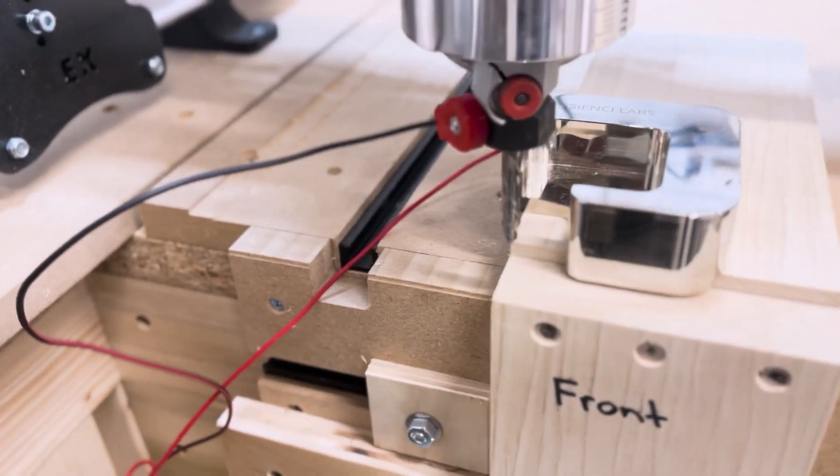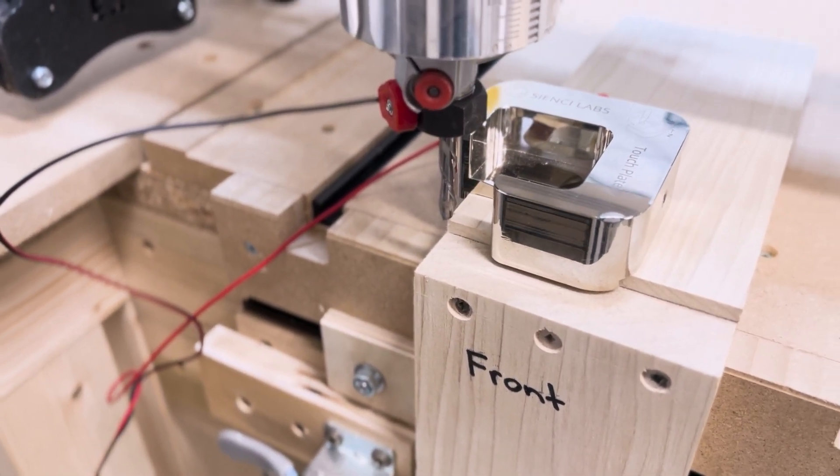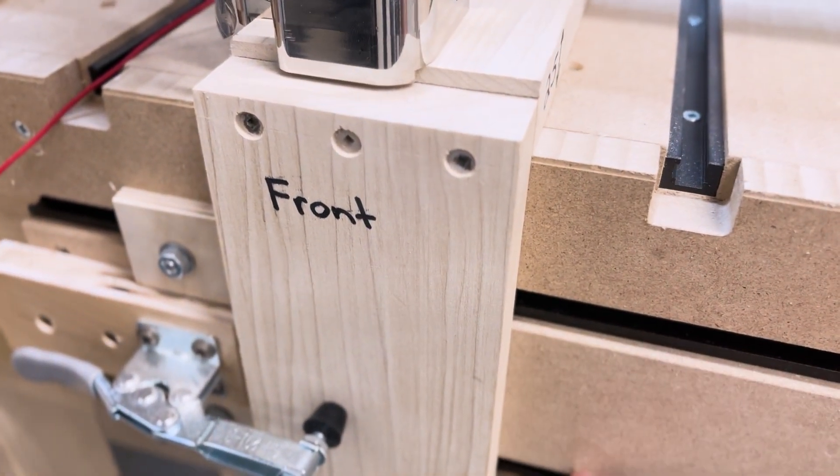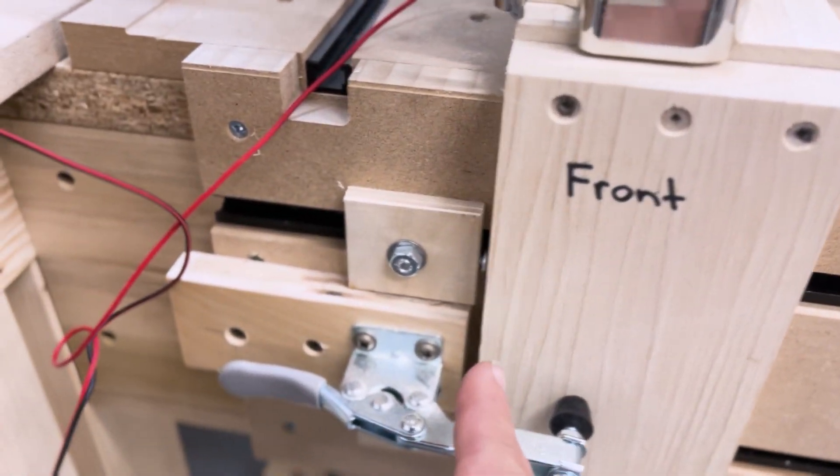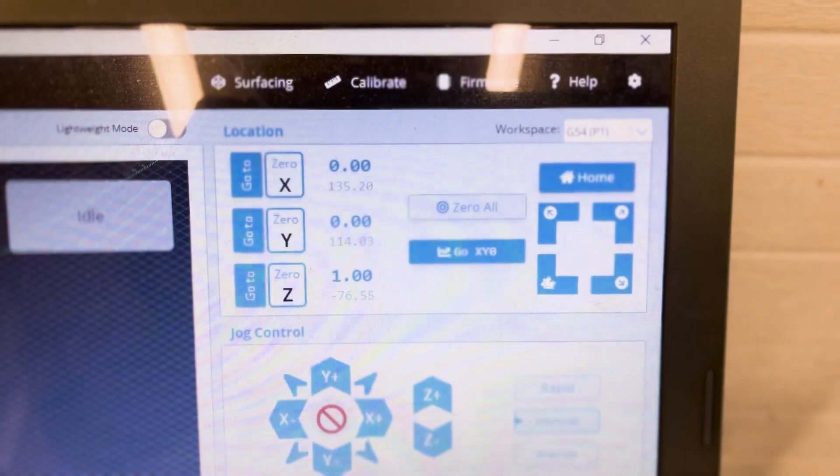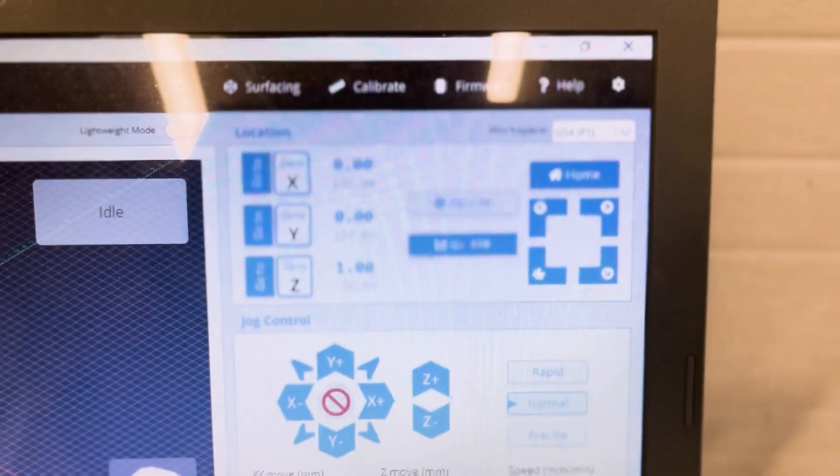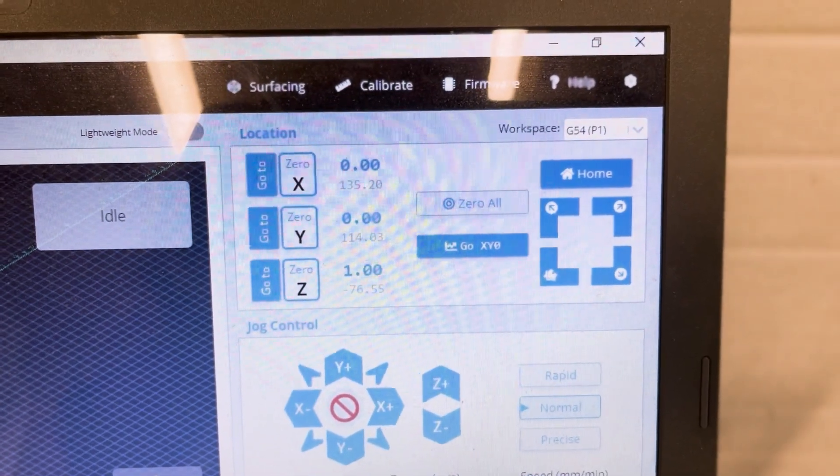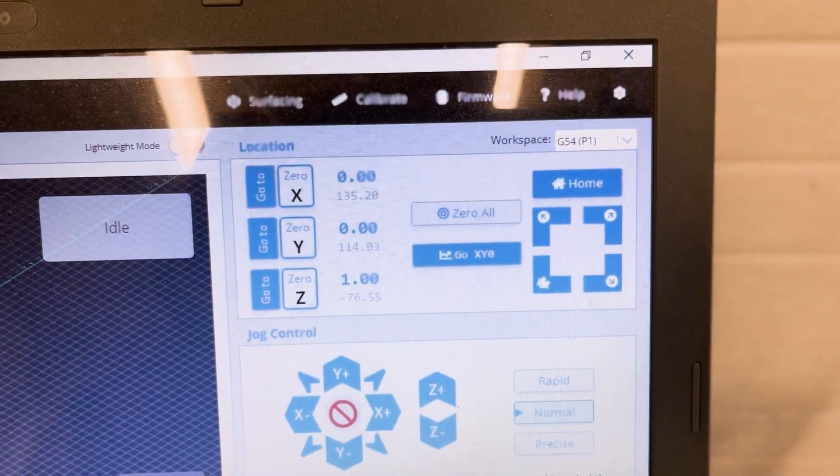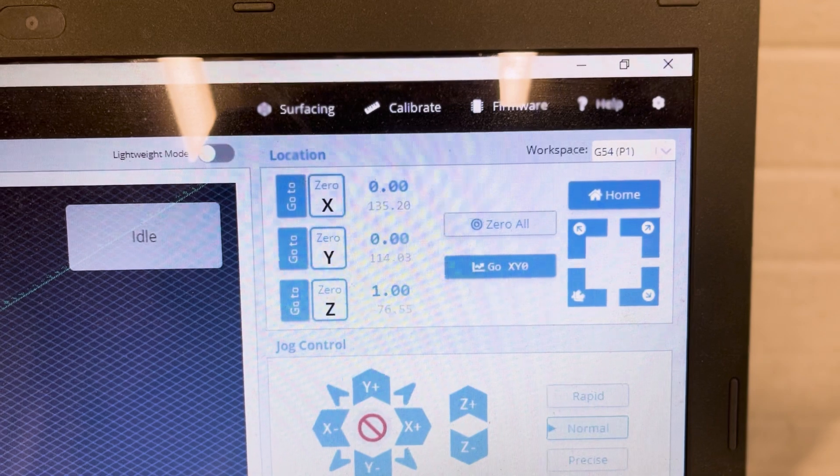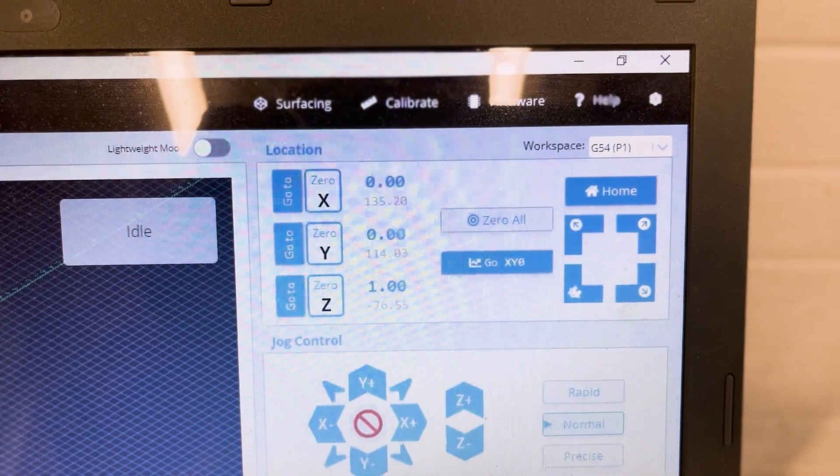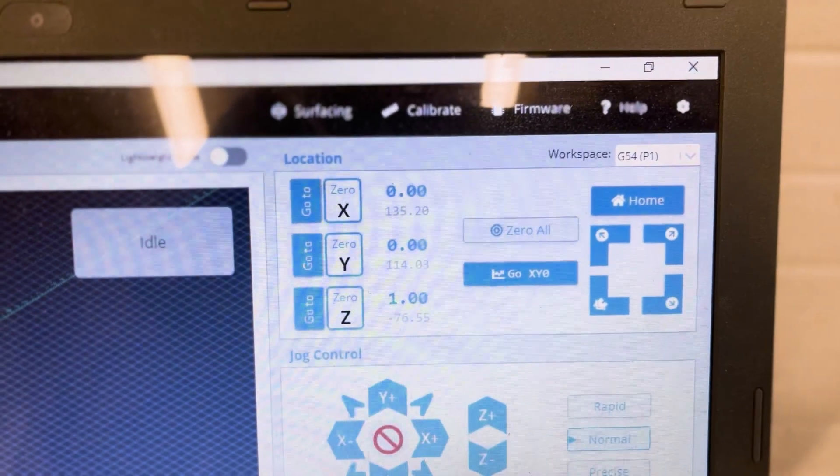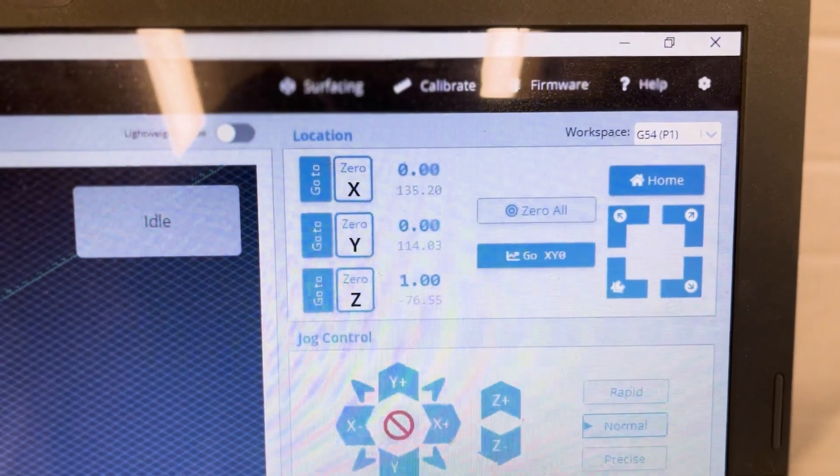As you can see, the machine has found the origin, which is against the face here and against the edge stops here. Now on the screen, you can actually see that the x is 135.2 and the y is 114.3. So you may want to write those numbers down for your machine so that you don't lose them. So you don't have to check origin all the time, but it's probably not a bad idea to do that.